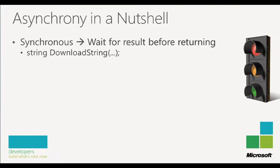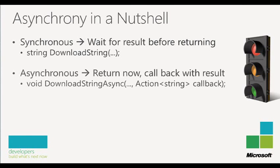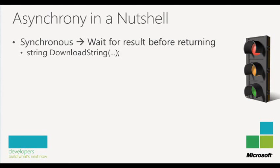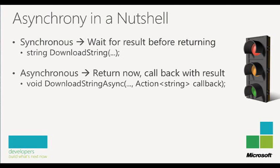Let's talk about a concrete example. With synchronous programming, you wait for a result — normal method calls. You call download string, give it parameters, and it returns a string; the method wouldn't return until the string is available. For asynchronous programming, you pass the same parameters but also pass in some sort of delegate — an action of string — and you say, here's what I want to do once the string is available. Because the string might not be available for 5, 10 seconds, a minute, you have to return void right away. You can't return a string immediately.